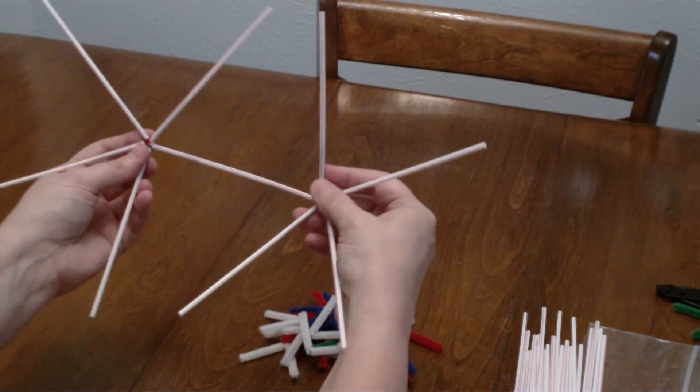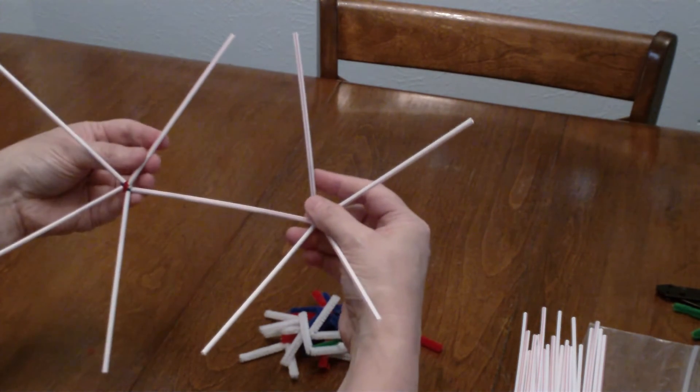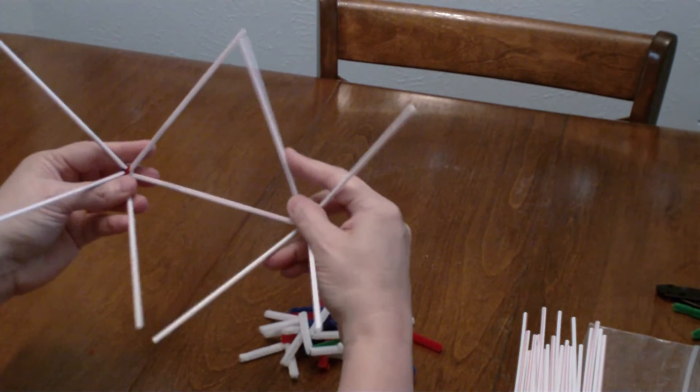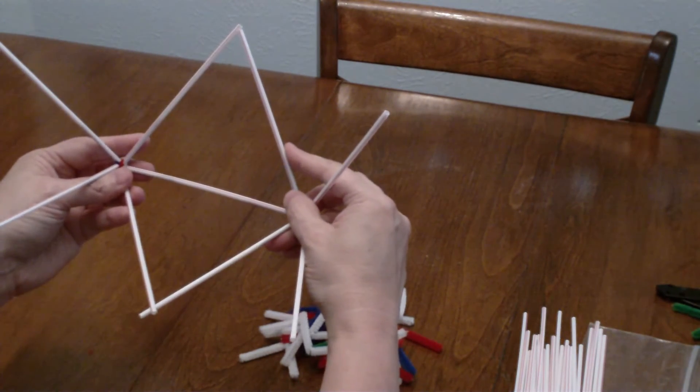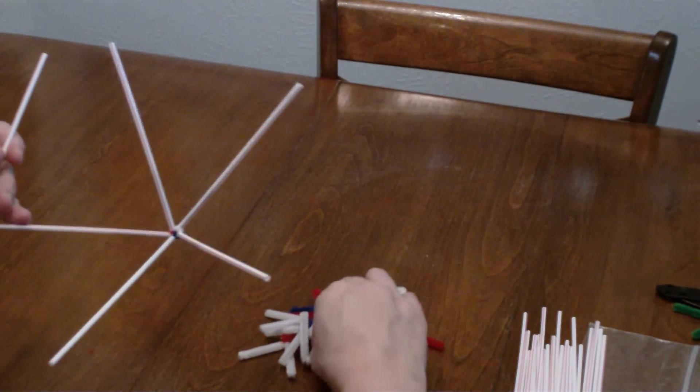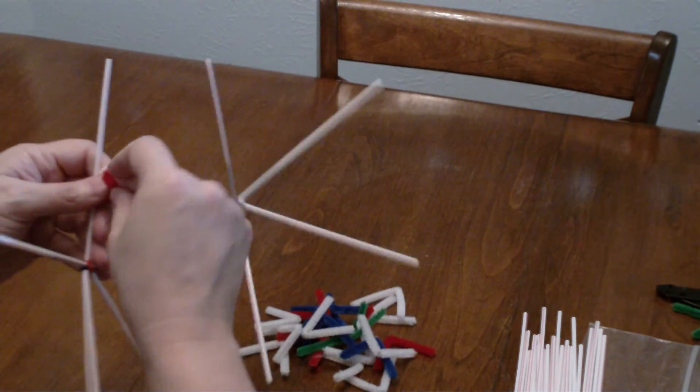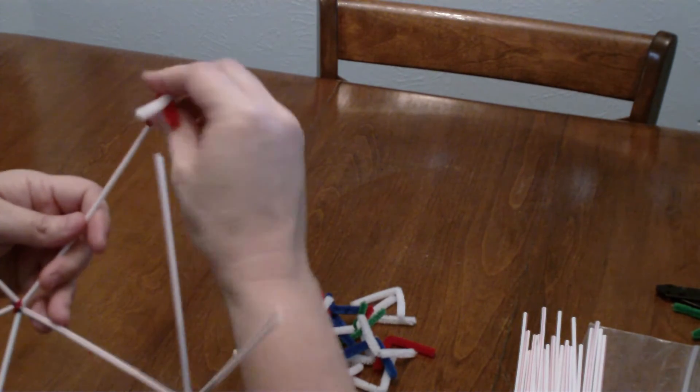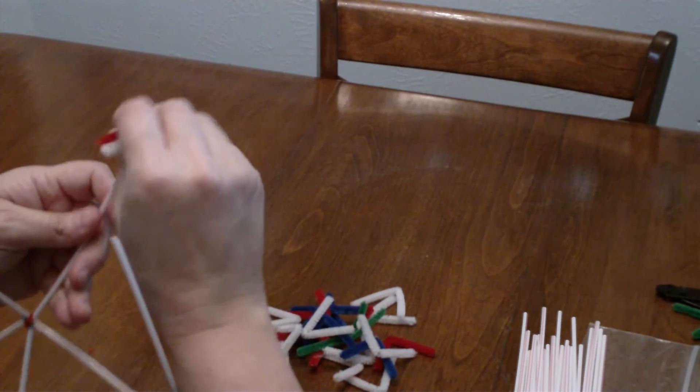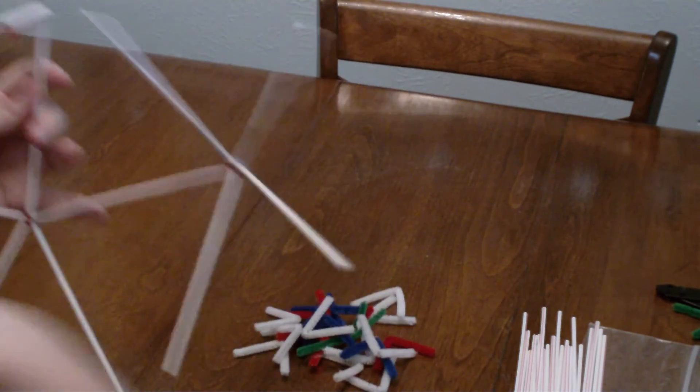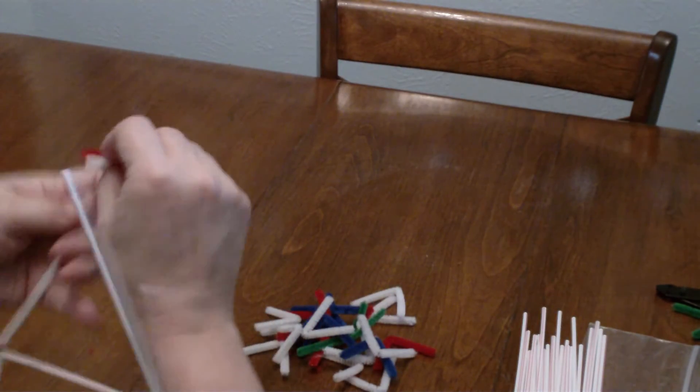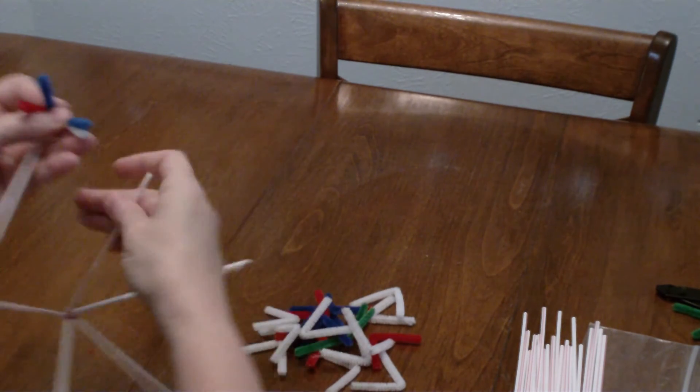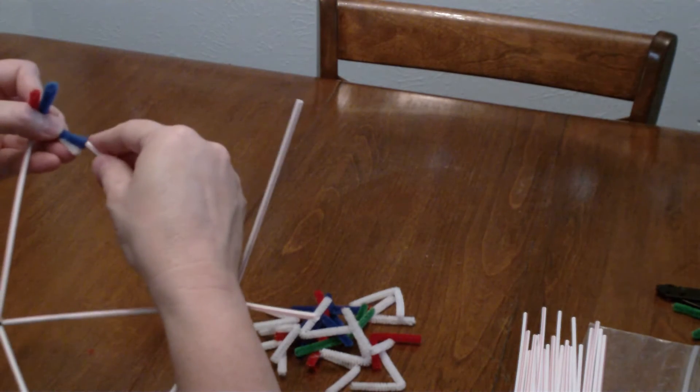Now this is called an icosahedron because it's got 20 equilateral triangles. So you can see here's like two of my equilateral triangles starting to form. Now it really doesn't matter which way you do this, I mean where you start. I just find it's easier to start building triangles, because that way I can kind of keep track where I am.